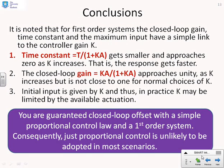Some conclusions. It's noted that for first-order systems, the closed-loop gain, time constant, and maximum input have a simple link to the proportional compensator gain K. The time constant is given by T over 1 plus KA, so it gets smaller as K increases and approaches 0 for large K. The response gets faster. The closed-loop steady-state gain is KA over 1 plus KA, so it approaches unity as K increases, but it's not close to 1 in general for normal choices of K.